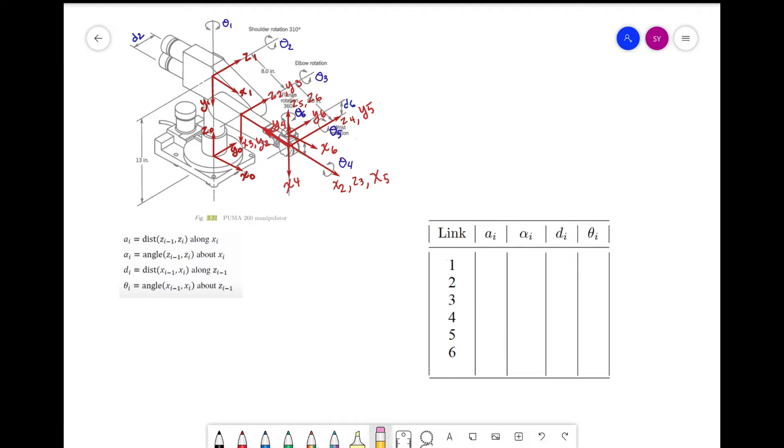Those two rules are that x_i is perpendicular to z of i minus 1, and that x_i must intersect z of i minus 1. And then we can select y according to the right hand rule.